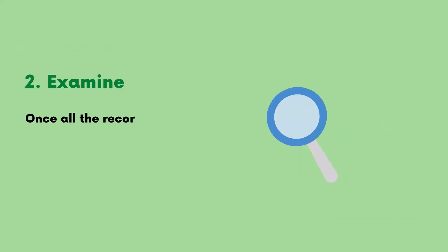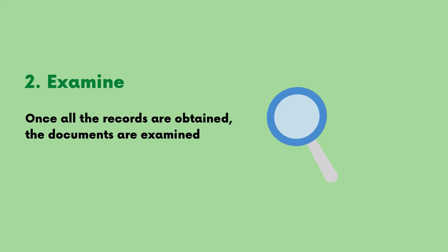Stage 2: Examine the Documents. Once all the records are obtained, the documents are examined for errors, such as closure errors.